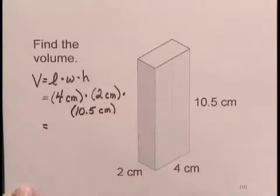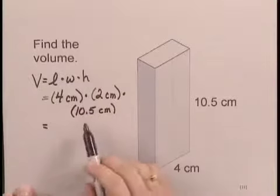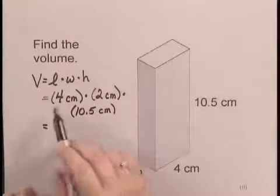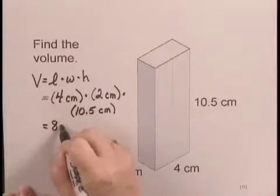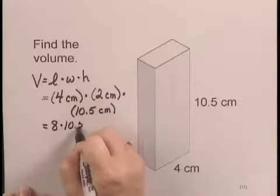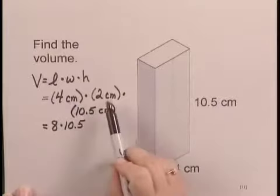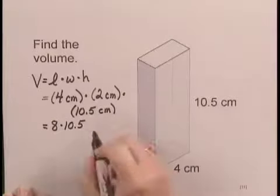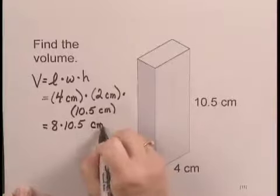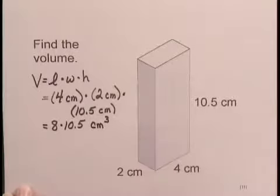Now we can multiply 4 times 2 times 10.5. Multiplying 4 times 2, that's 8. 8 times 10.5. And I have three units of centimeters - centimeters times centimeters times centimeters - so I'll write cubic centimeters. Finally, multiplying 8 times 10.5, I get 84 cubic centimeters as the volume for this figure.